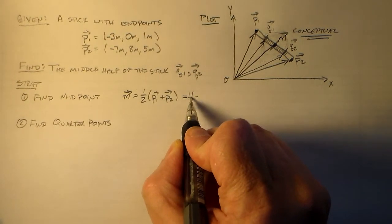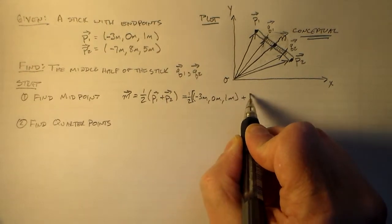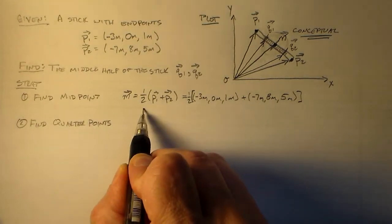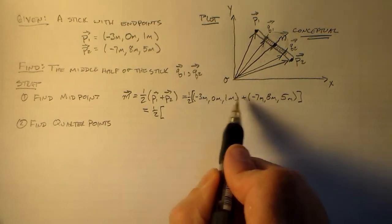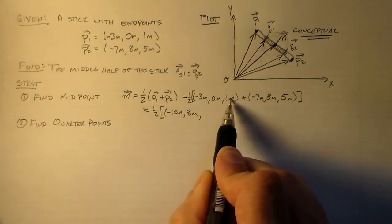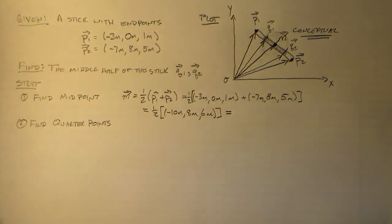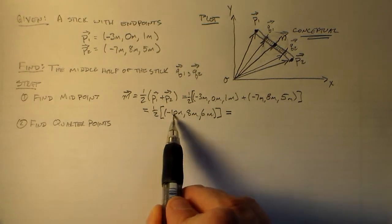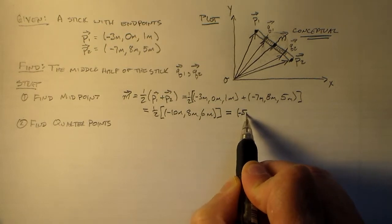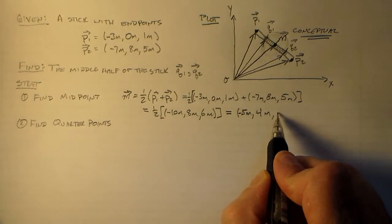So let's see what happens here. We have one half times minus three meters, zero meters, one meter, plus minus seven meters, eight meters, five meters. And that all equals one half times minus three minus seven, that's minus ten meters. Zero plus eight, that's eight meters. And one plus five, that's six meters. Again, we're adding component by component.